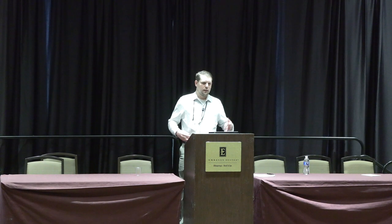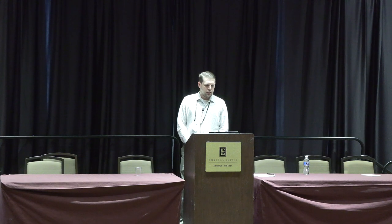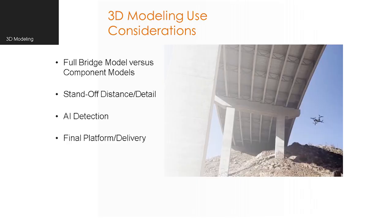My next slides go over how we've implemented 3D modeling. The drawback before we get into it is the post-processing time. When determining whether you need video or 3D modeling, consider what you're looking for in the scope of work. Within 3D models, we have full bridge models versus component models. Standoff distance and detail matter — how close does the drone need to be to get the detail needed? We're also experimenting with AI crack detection, which requires ensuring your standoff distance captures sufficient detail. And how are we delivering this to the client?